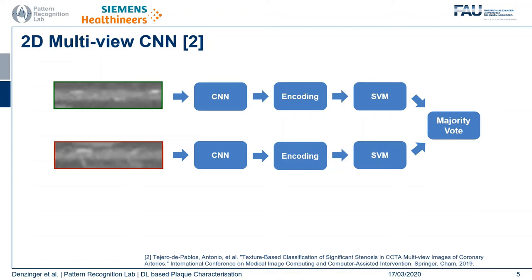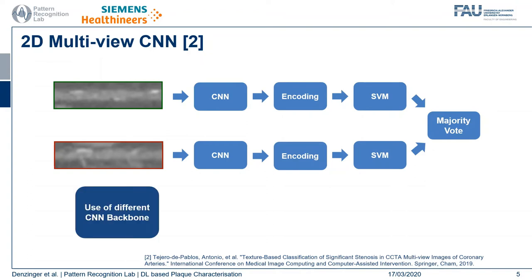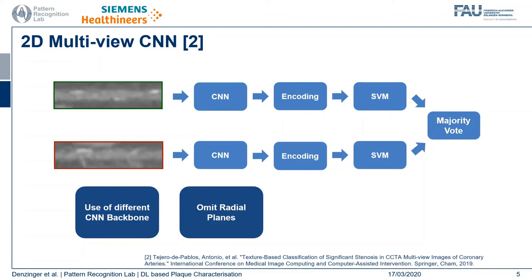All the slices are finally then combined by a majority vote. In our work we use a different convolutional neural network backbone — originally the VGG backbone was used, and we instead chose to use the ResNet backbone. We also omitted the radial planes since they performed the worst in the original publication.